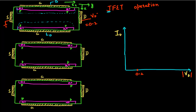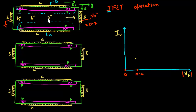This electric field will drive the holes present in the P region towards my drain contact, and I'll get a drain current. As I vary my drain voltage from 0 to 0.2 V, I get a linearly increasing electric field and therefore a linearly increasing current in this region.